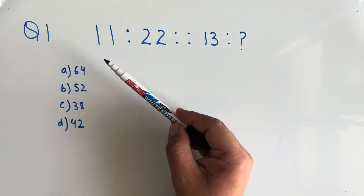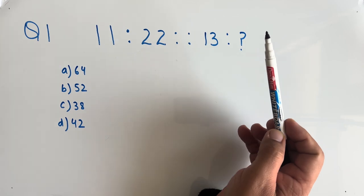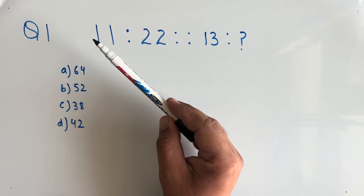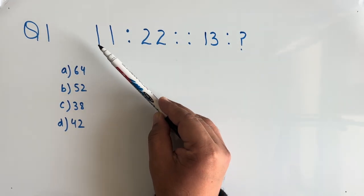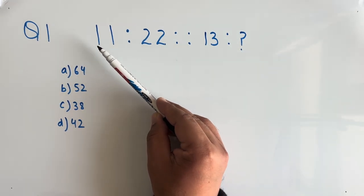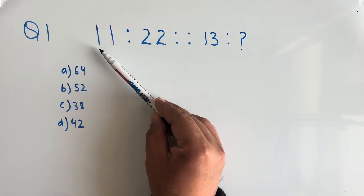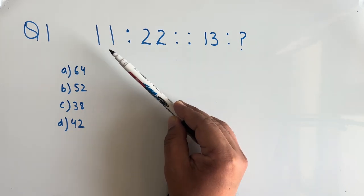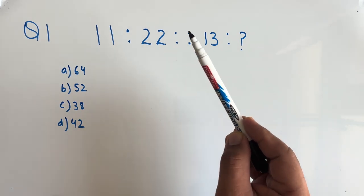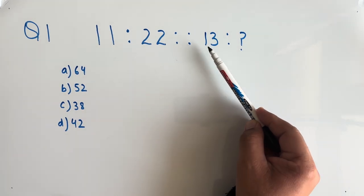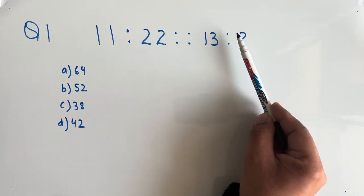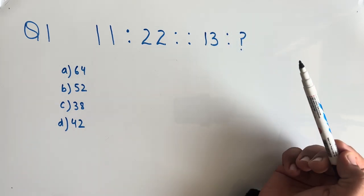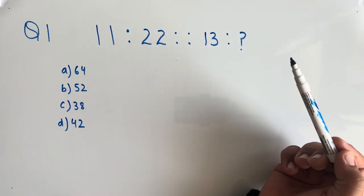Now this type of question is called number analogy, in which we have to find the relation between 11 and 22, and with the same relation we will be finding the missing number between 13 and the unknown.